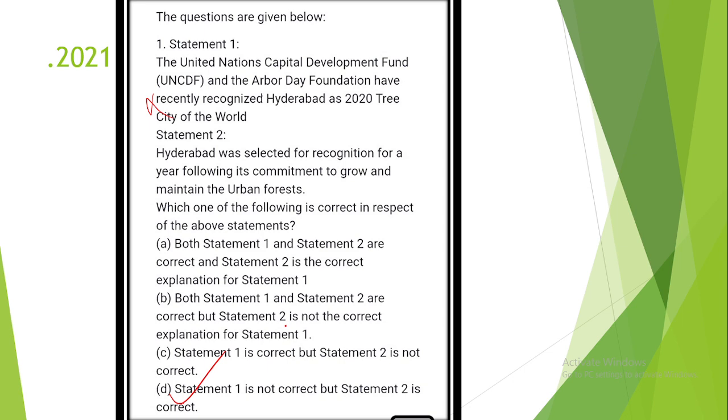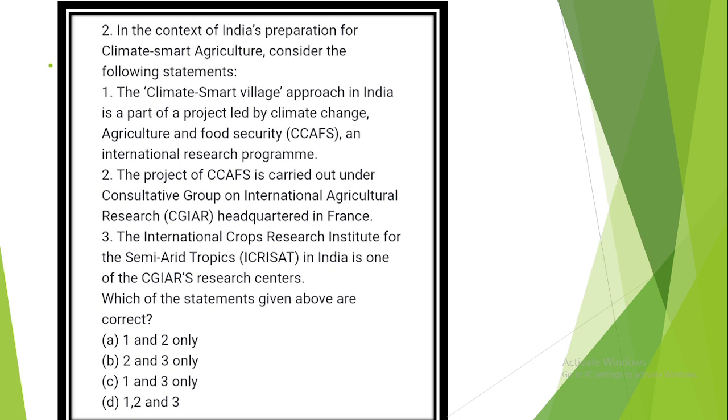In the context of India's preparation for climate smart agriculture, consider the following statement. The answer is Option D. Climate smart village approach in India is part of projects led by climate change, agriculture and food security international research program. The project is carried out under the consulting group on international agriculture research headquartered in France. The International Crop Research Institute for Semi-Arid Tropics in India is one of the CGIAR research centers.